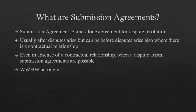Please recollect the WWHW acronym used in the previous lectures. The first W stands for what kind of disputes should be referred to arbitration. Who stands for who should be the person arbitrating, administering, or appointing the arbitral tribunal — this was the second W. How stands for how the arbitration should be conducted, that is the procedural aspect such as applicable rules or statute — this was the H. And lastly, where stood for the seat or place of arbitration — this was the last W. The WWHW acronym applies to submission agreements also.